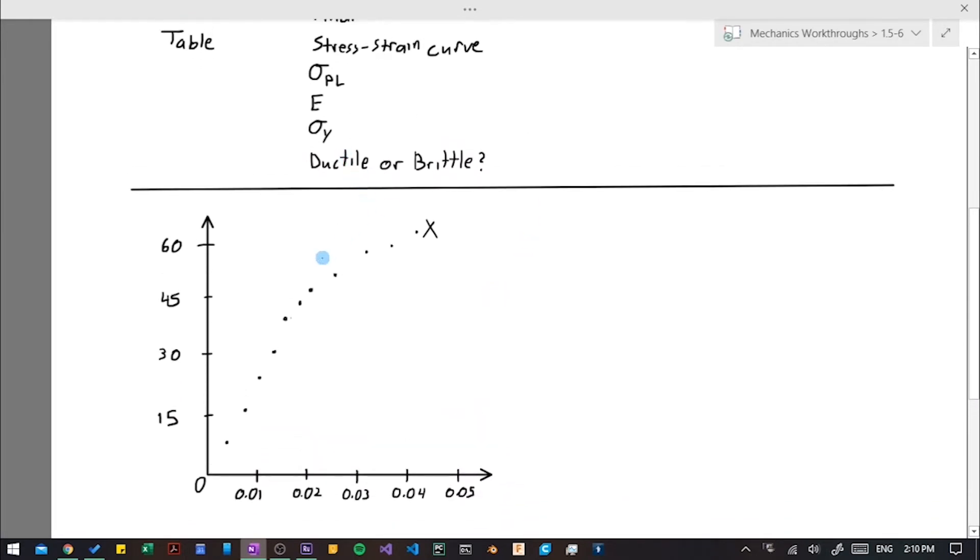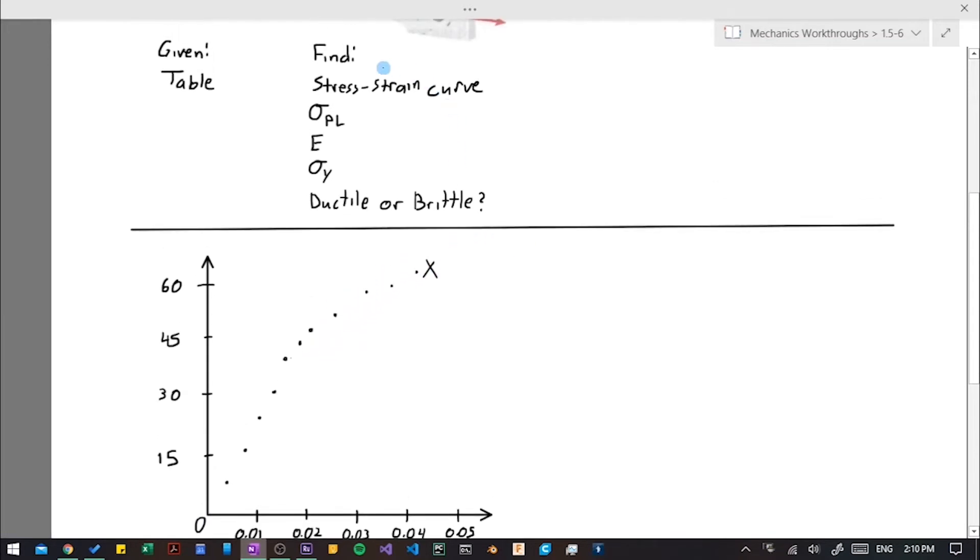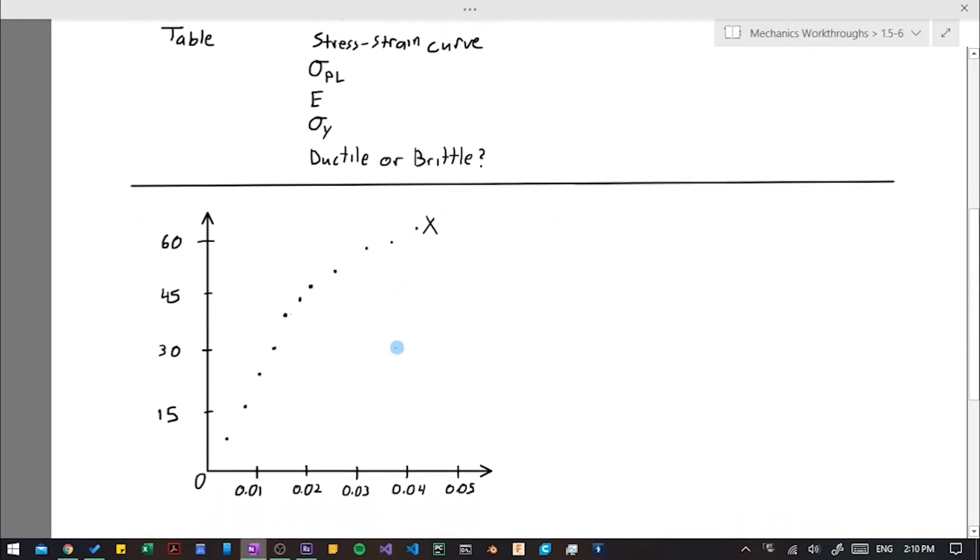Alright, so here's our plot. As you can see, it's not going to be perfect doing it by hand. And so it's kind of, since our values that we're going to be finding are based off the graph, it's going to be a little bit arbitrary. So just try to get it close.